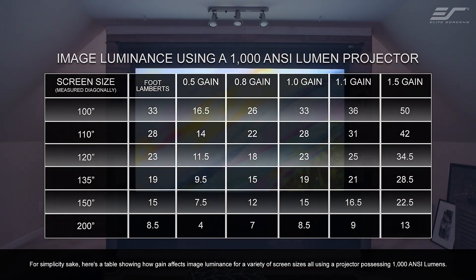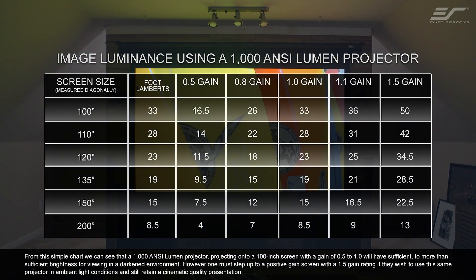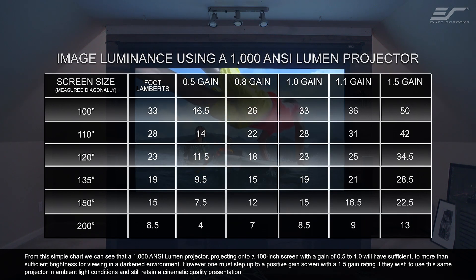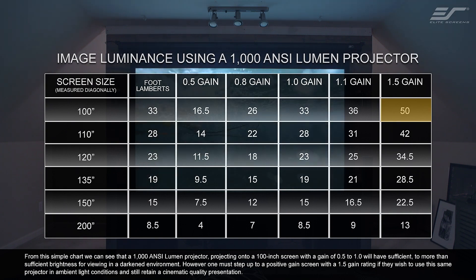For simplicity's sake, here is a table showing how gain affects image luminance for a variety of screen sizes, all using a projector possessing 1,000 ANSI lumens. From this simple chart, we can see that a 1,000 ANSI lumen projector projecting onto a 100-inch screen with a gain of 0.5 to 1.0 will have sufficient to more than sufficient brightness for viewing in a darkened environment. However, one must step up to a positive gain screen with a gain of 1.5 if they wish to use this same projector in ambient light conditions and still retain a cinematic quality presentation.